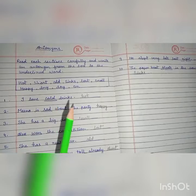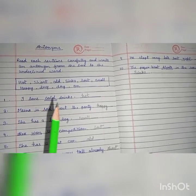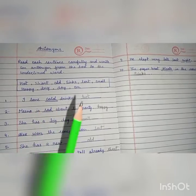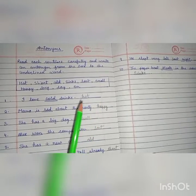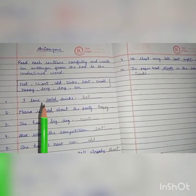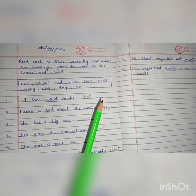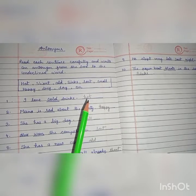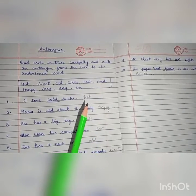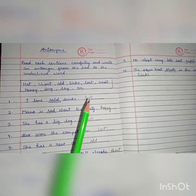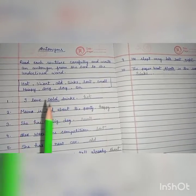First sentence kya hai? 'I love cold drinks.' Dekhiye kya underline huwa hai — which means ki humi iska opposite word ya antonyms word likhna hai. To cold ka kya hoga opposite? Hot. Yaha pe ek line kheench ke likhna hai. Yeh bhoat messy dikhega — it looks very untidy, so yaha pe alag se ek line stretch karke likhna hai. With pen only — in your fair copy, you all have to write with black pen. Cold ka opposite kya hoga? Hot.